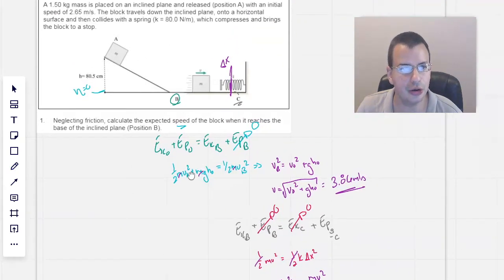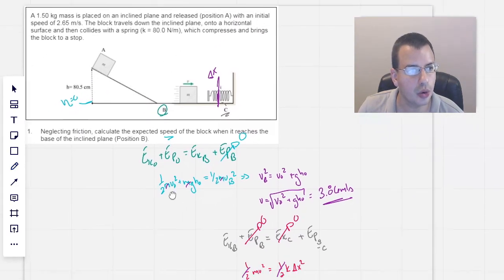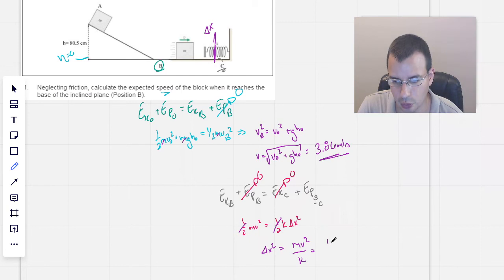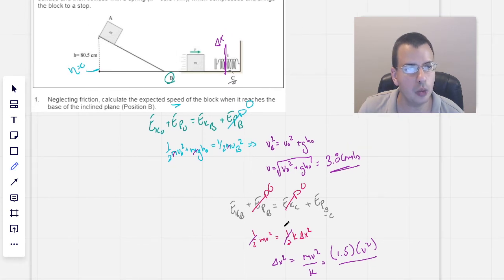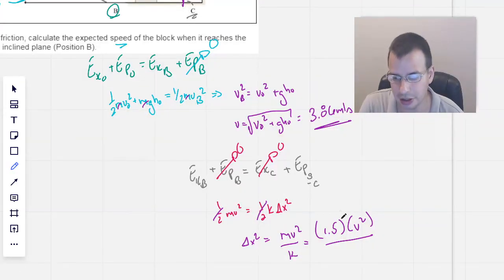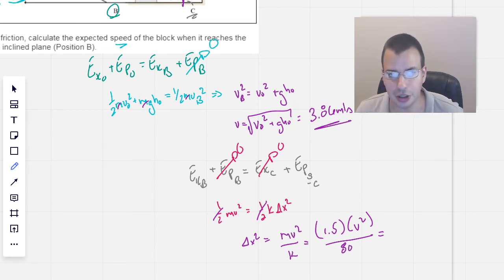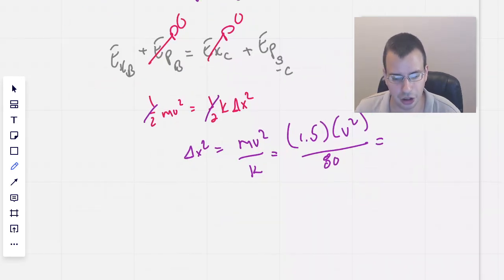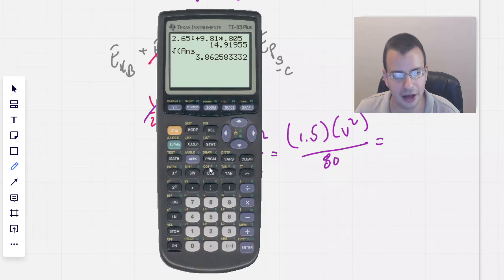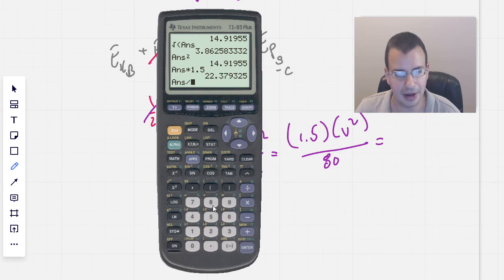Mass, we know, is 1.5, so we have 1.5, I'm going to leave v squared here because it's still in my calculator, and then we know that k was 80 newtons per meter, and that is still in SI unit, so we're good there. So, working this out, we have, go back to squared, times 1.5, divided by 80.